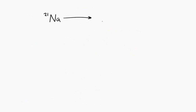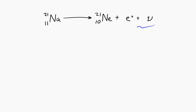Let's look at another example. Let's say we have sodium-21, and it decays by beta plus decay. Sodium, if you look at a periodic table, has 11 protons, so it has a charge number of 11. It decays into neon-21, and neon has 10 protons. Since it's beta plus decay, on the right side we also have a positron — with numbers 0, 1 — and a neutrino — with numbers 0, 0.